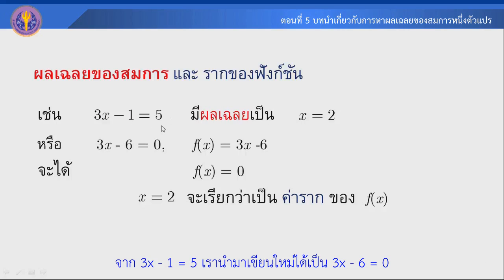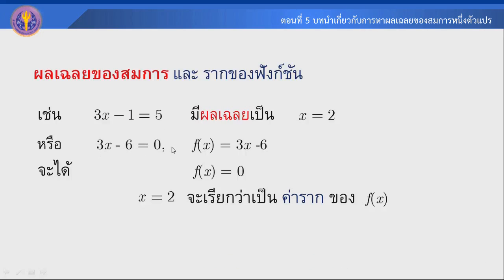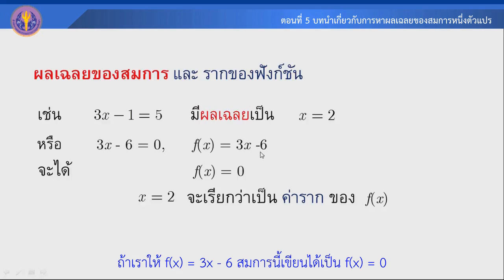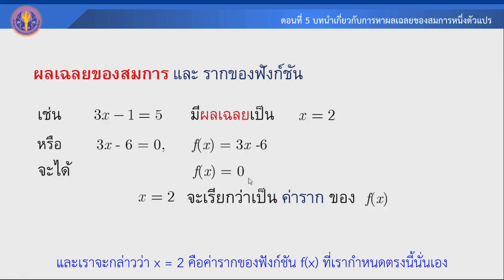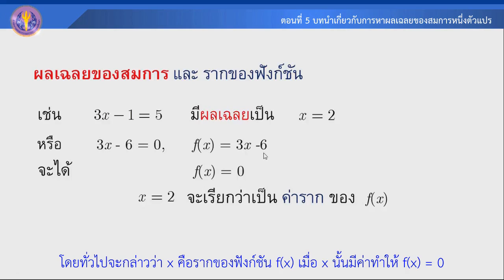จาก 3x - 1 = 5 เราจะได้ 3x - 6 = 0 ถ้าเรากำหนดให้ f(x) = 3x - 6 เราจะหาค่าที่ทำให้ f(x) = 0 แล้วเราจะกล่าวว่า x = 2 คือค่ารากของ function f(x) ที่เรากำหนดตรงนี้ โดยทั่วไปจะกล่าวว่า x คือรากของ function f(x) เมื่อ x นั้นมีค่าทำให้ f(x) = 0